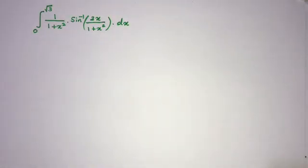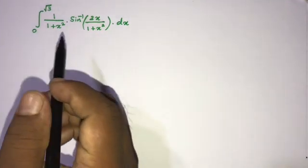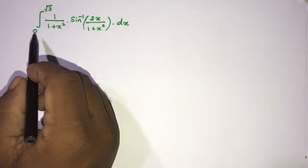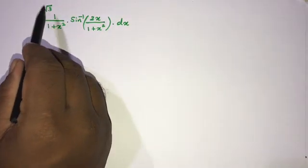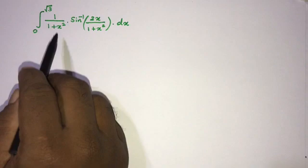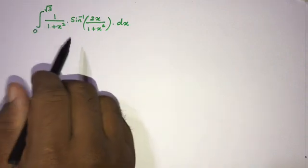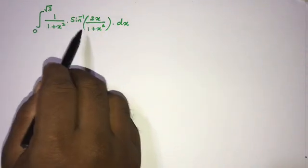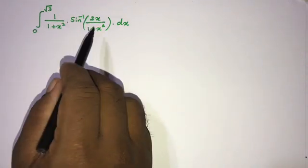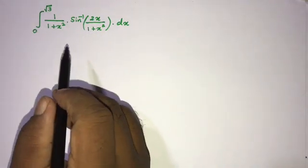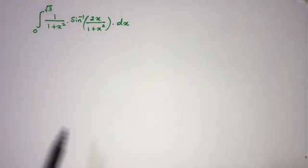Welcome to the Mathematics and My channel. Thanks for watching. Today we are going to solve another interesting integral question: the integral from 0 to the square root of 3 of 1 over (1 plus x squared) times arcsin of (2x over 1 plus x squared) dx. How do we begin?